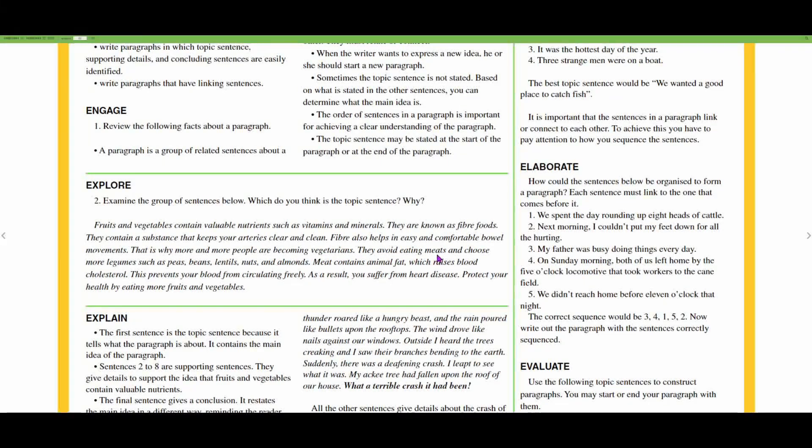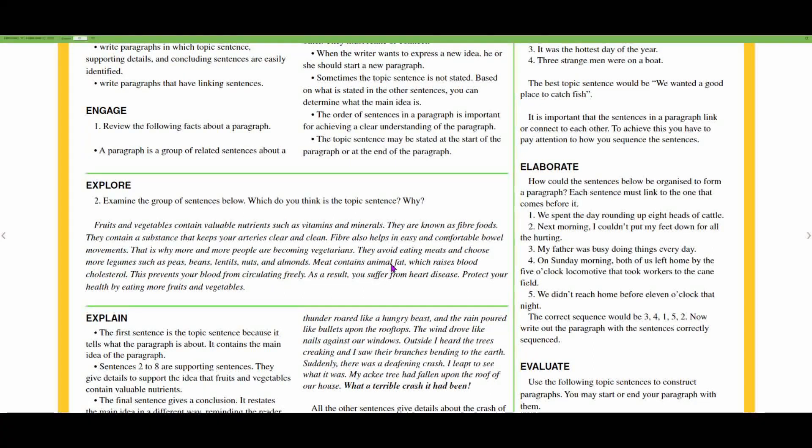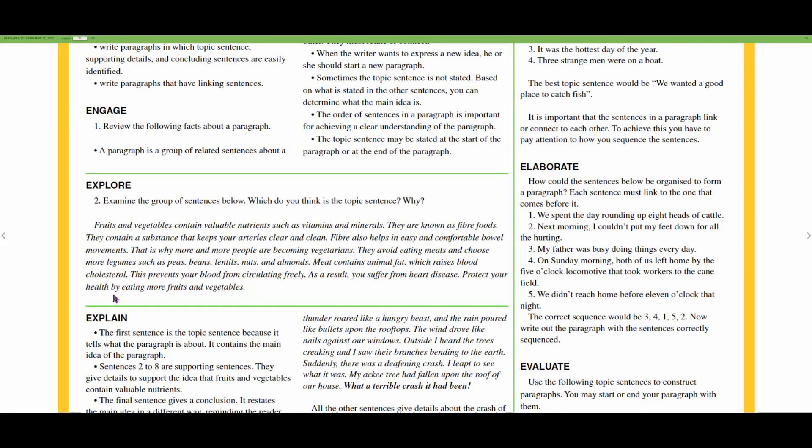Fiber also helps in easy and comfortable bowel movements. That is why more and more people are becoming vegetarians. They avoid eating meats and choose more legumes such as peas, beans, lentils, nuts, and almonds. Meat contains animal fats which raise blood cholesterol. This prevents your blood from circulating freely. As a result, you suffer from heart disease. Protect your health by eating more fruits and vegetables.